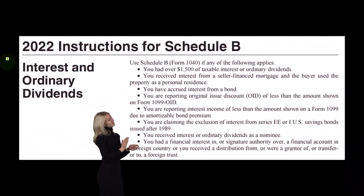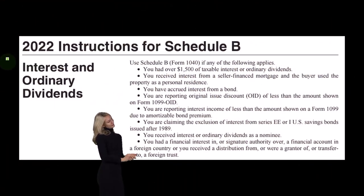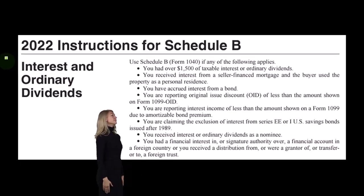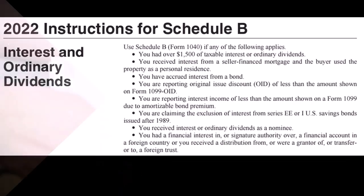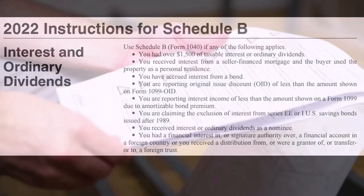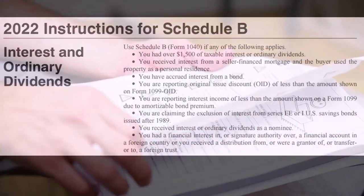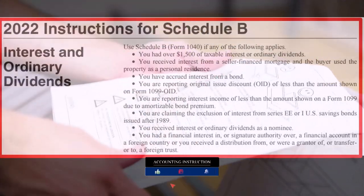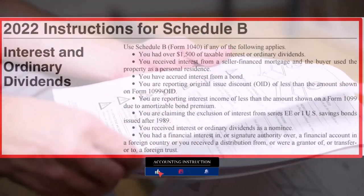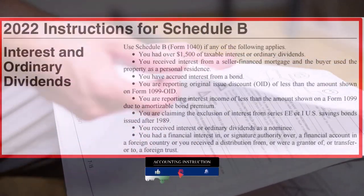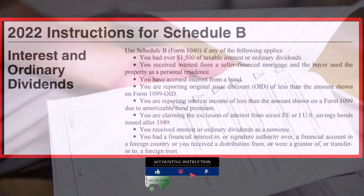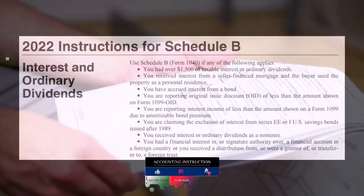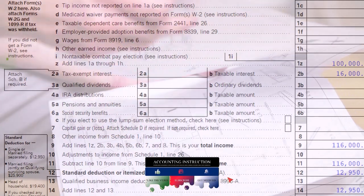Most of the information here is going to be coming from the 2022 instructions for Schedule B. Schedule B is a schedule that you might have to use if your interest goes above a certain threshold — that covers interest and ordinary dividends.